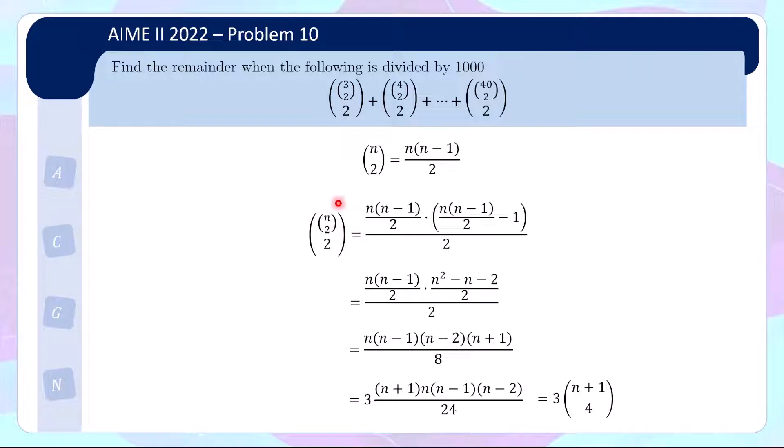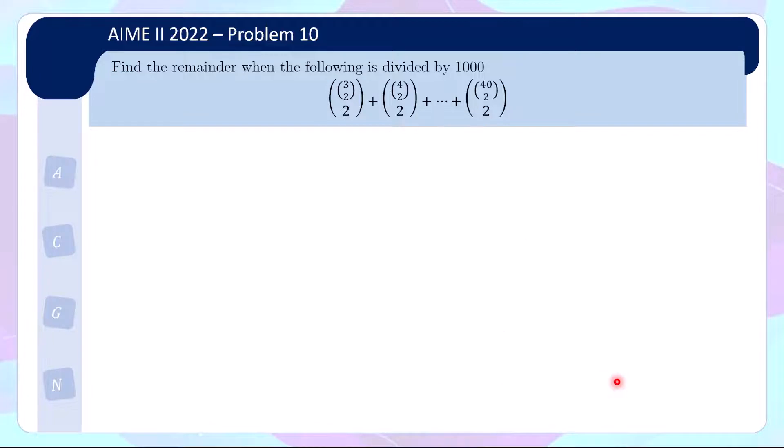So actually this complicated weird looking thing can become a simple binomial coefficient. So the sum that we want is actually 3 times 4 choose 4 plus 5 choose 4 added all the way to 41 choose 4.